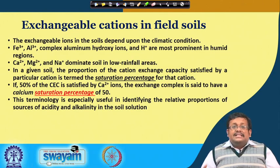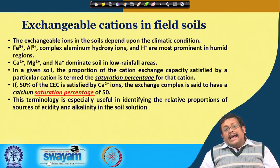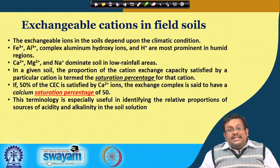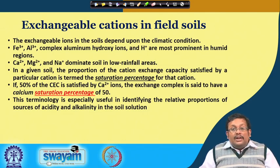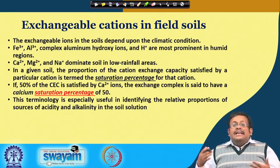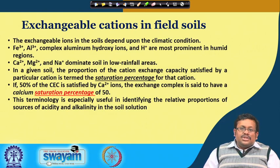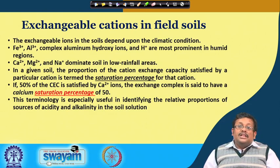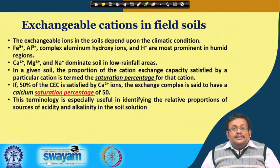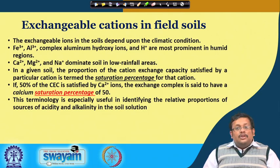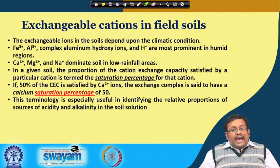Exchangeable cations in field soils depend upon climatic conditions. Iron, aluminum, complex aluminum hydroxy ions, and H⁺ are most prominent in humid regions. Calcium, magnesium, and sodium dominate soil in low-rainfall areas. In highly leached, warm, and humid conditions there will be formation of oxy-salts due to the dominance of iron and aluminum oxides. In humid regions, specifically warm and humid regions, there will be a predominance of iron and aluminum ions.